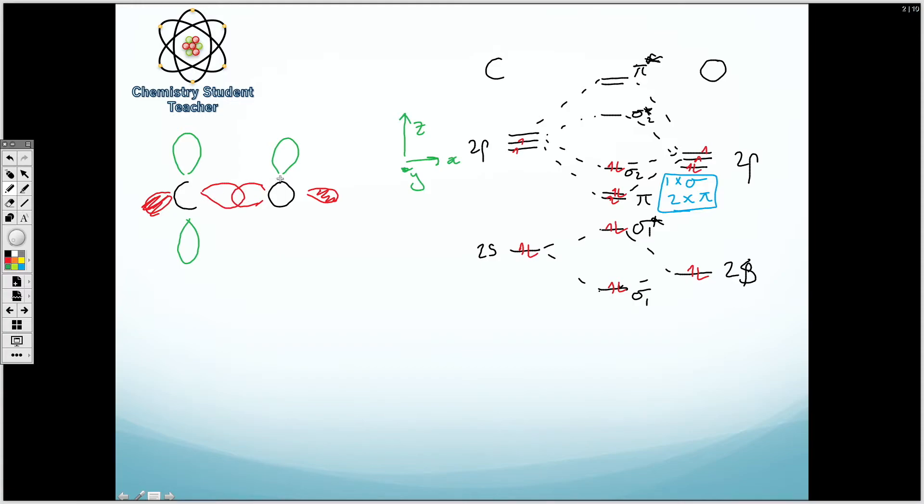So we've got a sigma bond on the x axis. We're now creating a pi bond on the z axis.